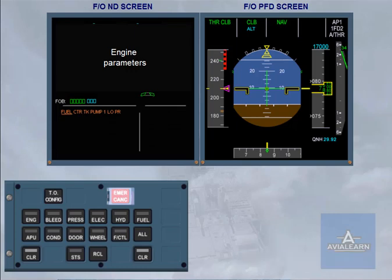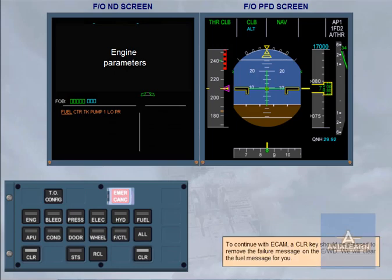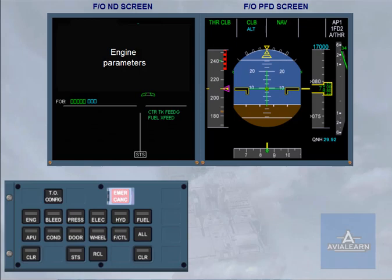To continue with the ECAM, a clear key should be pressed to remove the failure message on the engine warning display. We will clear the fuel message for you. Normally the status page would be displayed, but with only a single ECAM screen available, the status page must be manually selected.